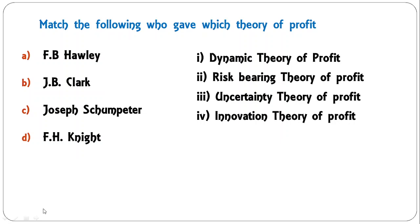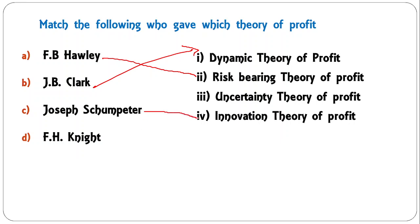Match the following — who gave which theory of profit? F.B. Hawley gave the risk-bearing theory. J.B. Clark gave the dynamic theory of profit. Schumpeter gave the innovation theory of profit. F.H. Knight gave the uncertainty theory of profit. This is a fact-based matching question.